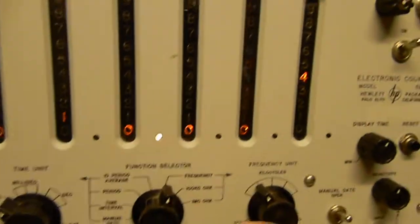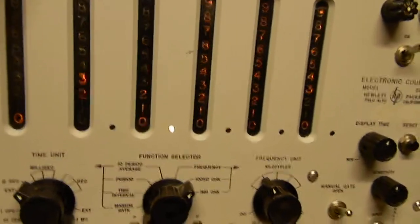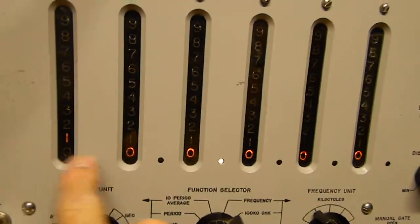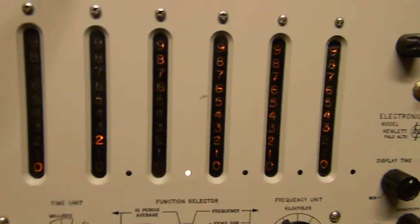So much for frequency. It also has a calibrator. Here's the 100 kilohertz cal, and there's the 100.000, so that's 100,000 to the cycle.